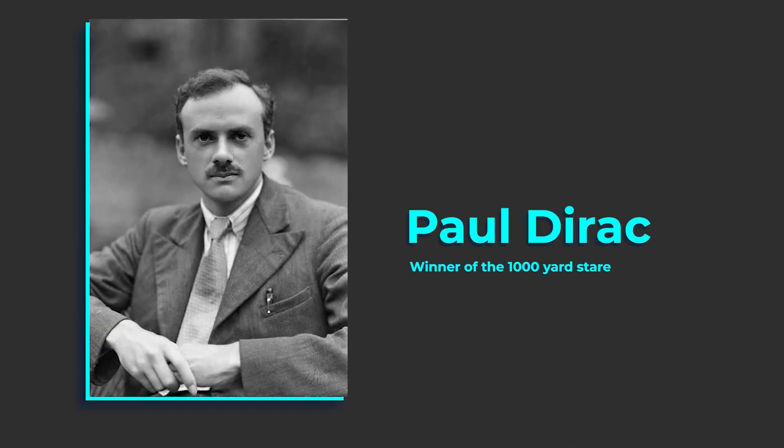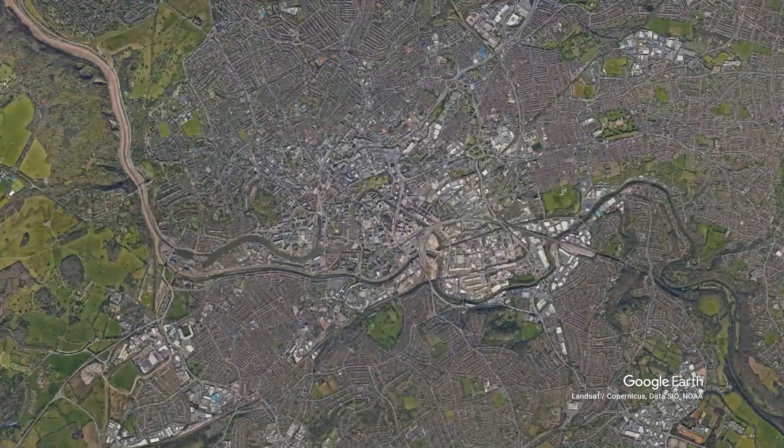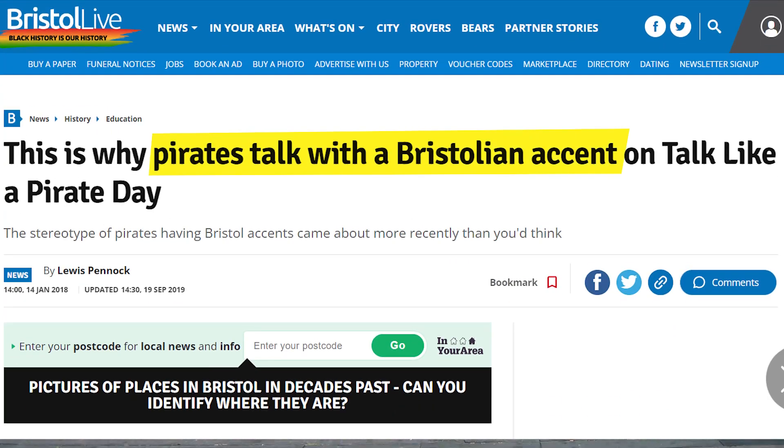The existence of antimatter particles was first predicted by Paul Dirac, a British physicist born in Bristol. Shout out to Bristol, we also made Banksy and pirate accents. But what actually is antimatter?